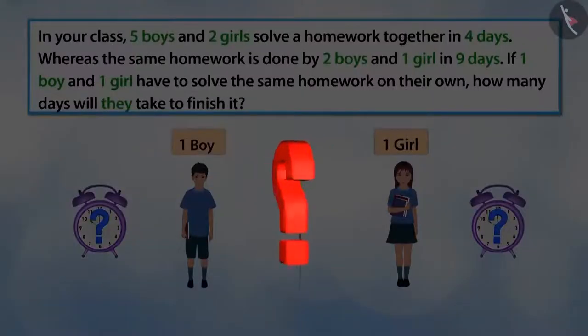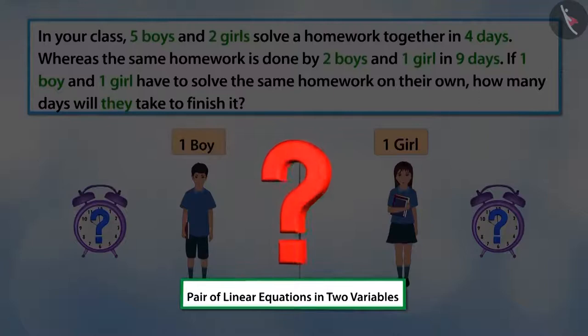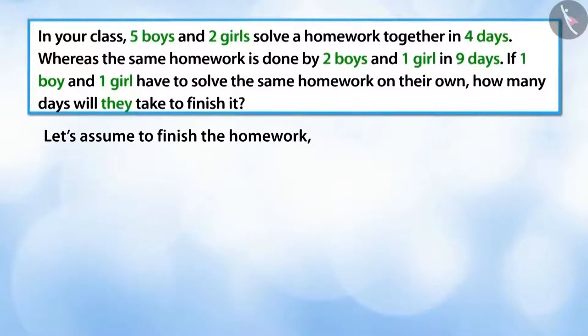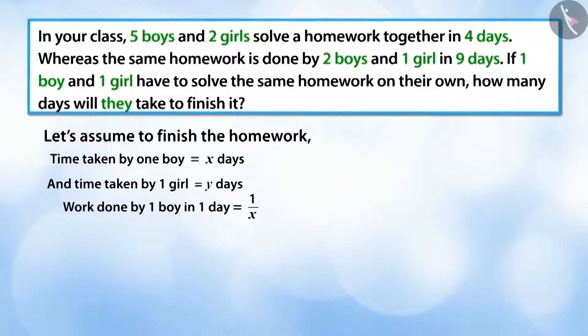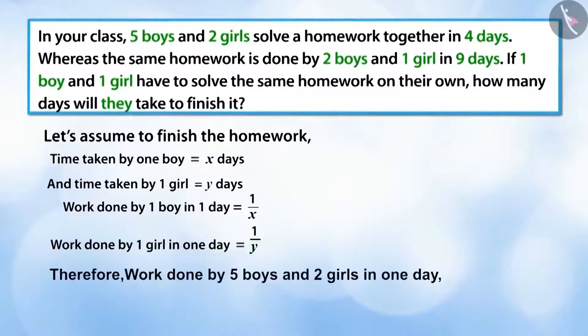Can you write a pair of linear equations in two variables to represent this situation? Let's make a pair of equations. Let's assume that a boy takes x days to finish this work on his own and a girl takes y days to finish the work on her own. Hence, in one day, a boy finishes 1/x amount of work and a girl finishes 1/y amount of work in one day.